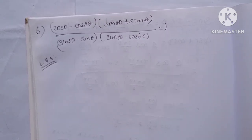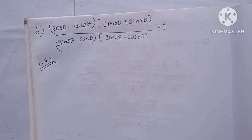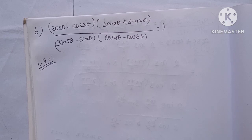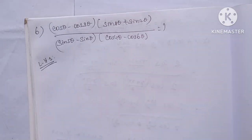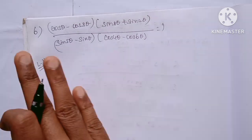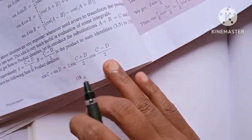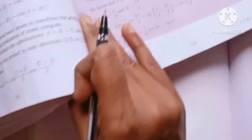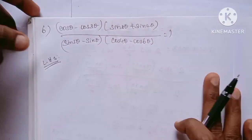If we look at the formula, we have cos C minus cos D, sin C minus sin D, and sin C plus sin D. We can use these formulas here.